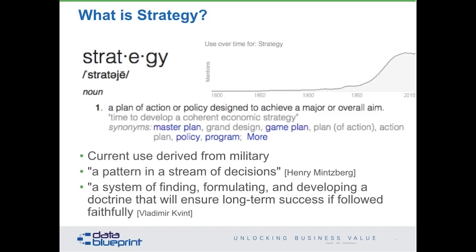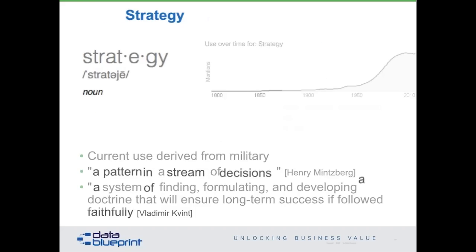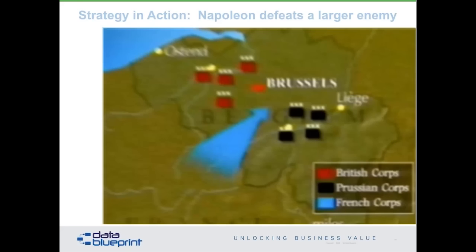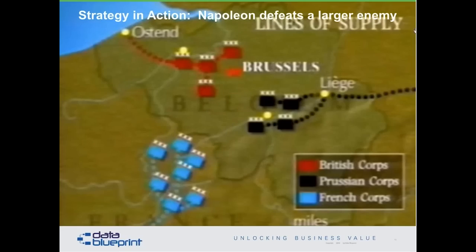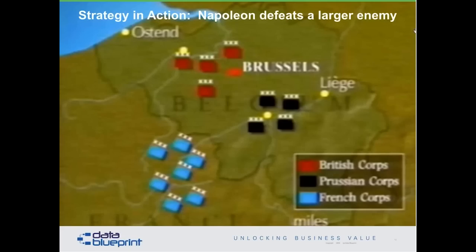When Napoleon hit them hard, the two armies retreated along their supply lines, meaning they were no longer one large force facing him. He made a pattern in his stream of decision making: go after the Prussians first because we hit them harder, then quick before the British figure out what's going on, go beat up the British. It's a classic strategy example from a military perspective. Or we can look at Wayne Gretzky — his definition of strategy is he skates where he thinks the puck is going to be. If you're chasing the puck, you're always playing catch-up.